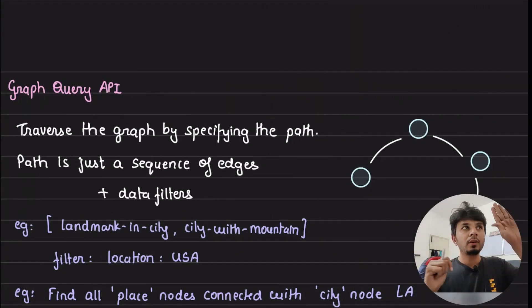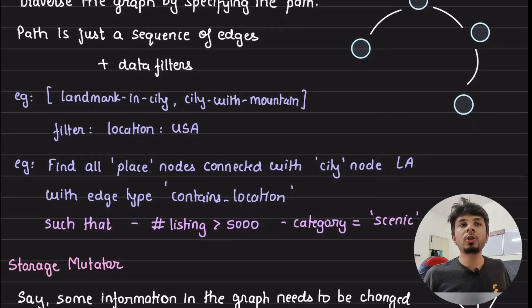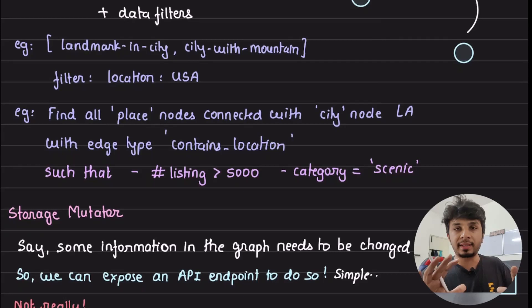Now we covered graph storage. Now let's talk about graph query API. So how a normal service, let's say search, wants to use this knowledge graph? How would they query it? So a graph typically is meant to be traversed because you don't know what kind of query you'll get, but you would have to traverse the graph and find the most relevant information out of it.